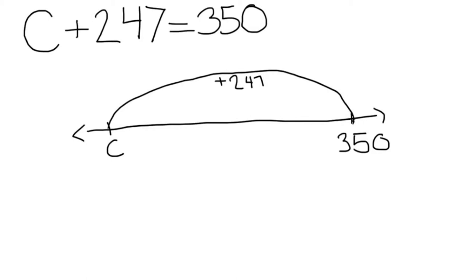The question now is how do you get back to your variable? Since we got 350 by adding 247, we'll go back to our variable by using the inverse operation, subtracting 247.